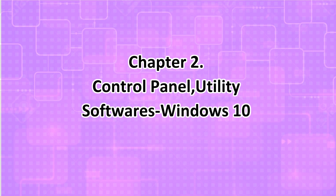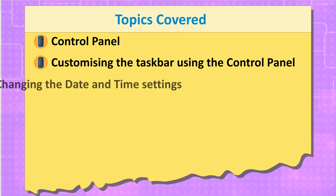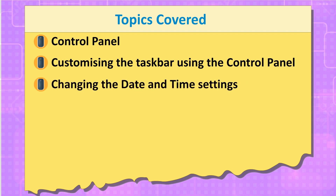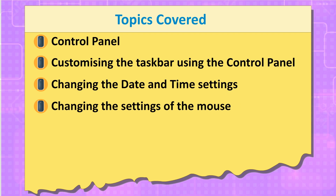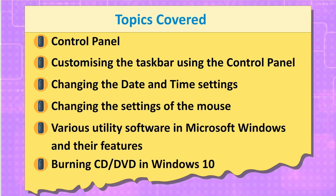Chapter 2: Control Panel and Utility Software in Windows 10. Topics covered include: Control Panel, customizing the taskbar using the Control Panel, changing the date and time settings, changing the settings of the mouse, various utility software in Microsoft Windows and their features, and burning CD/DVD in Windows 10.